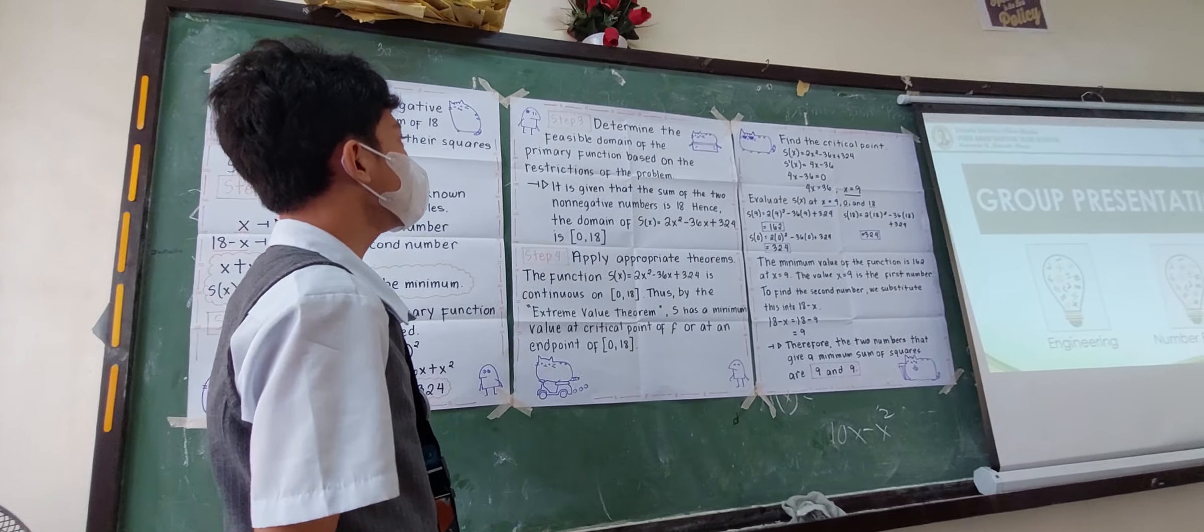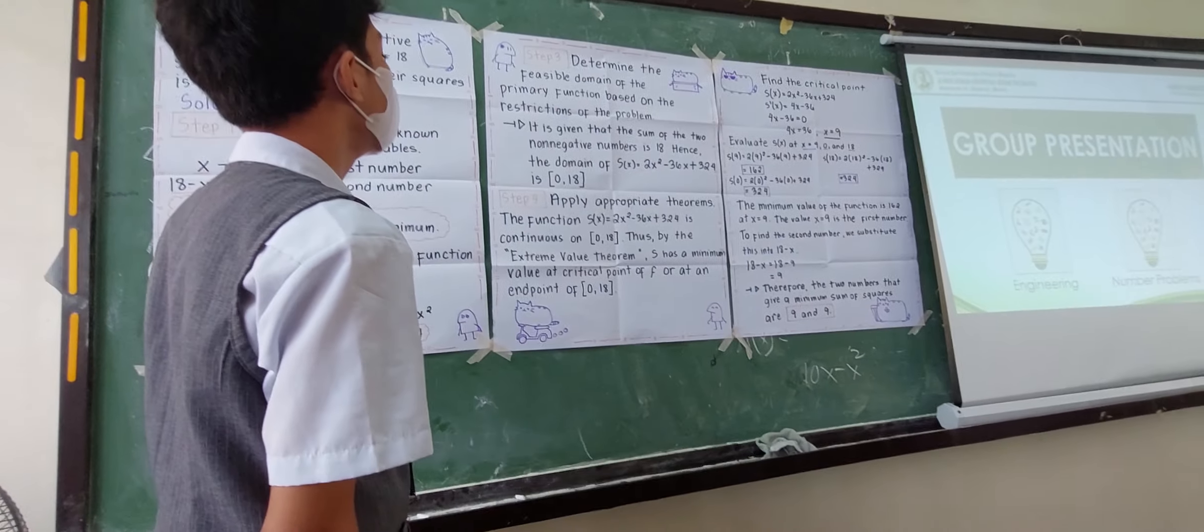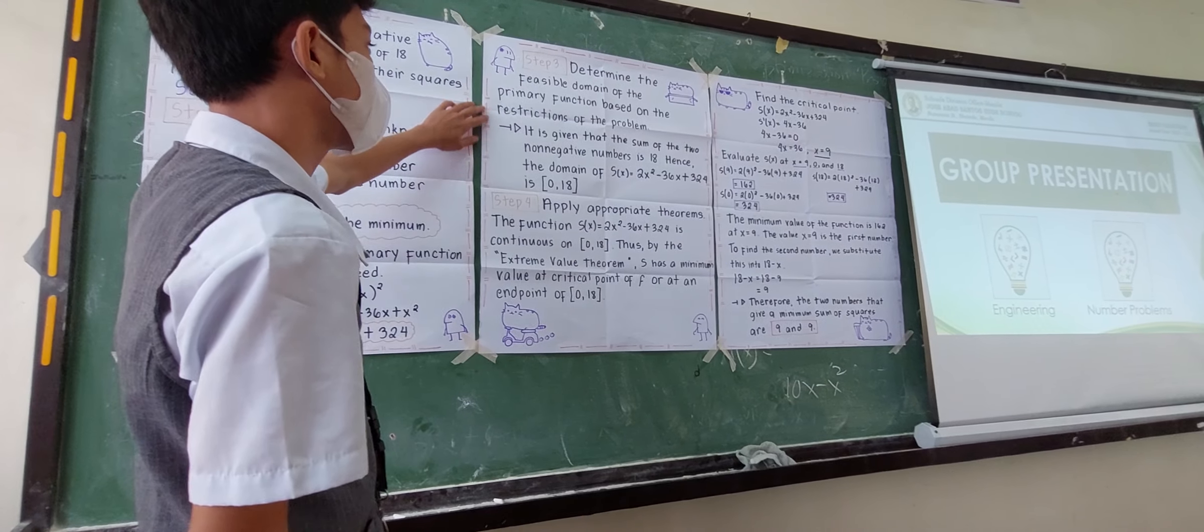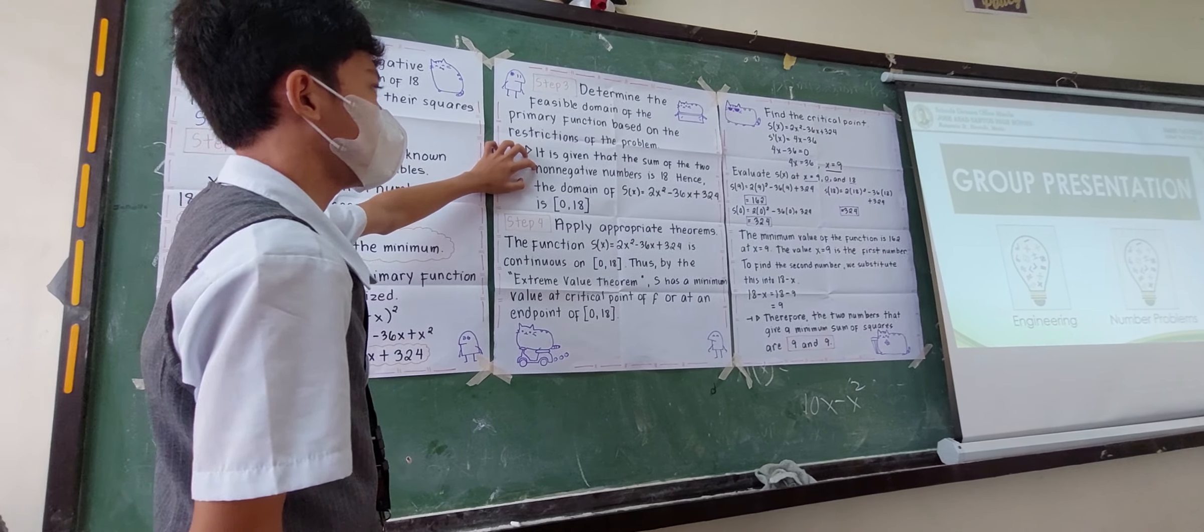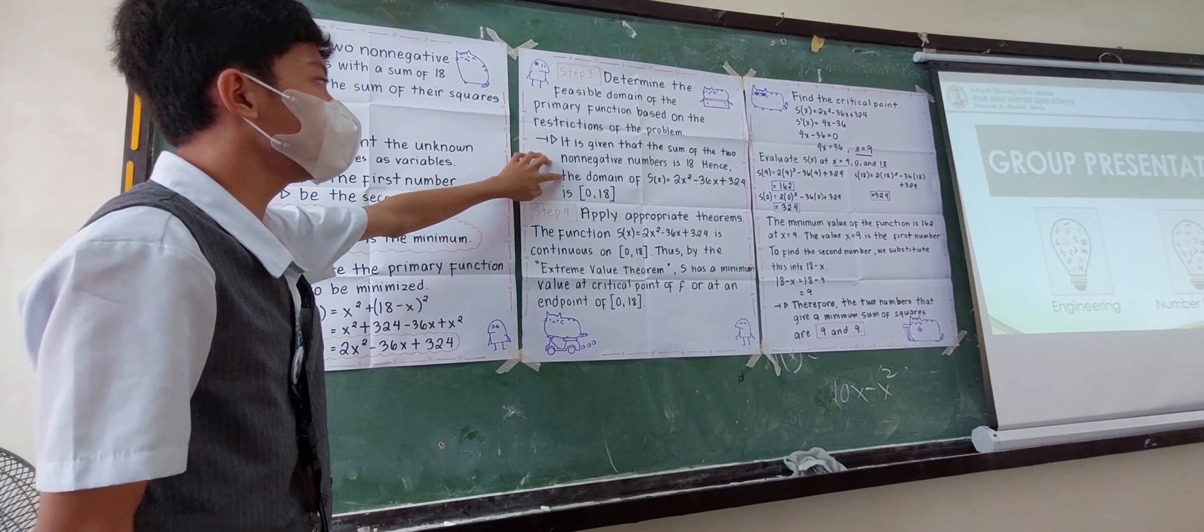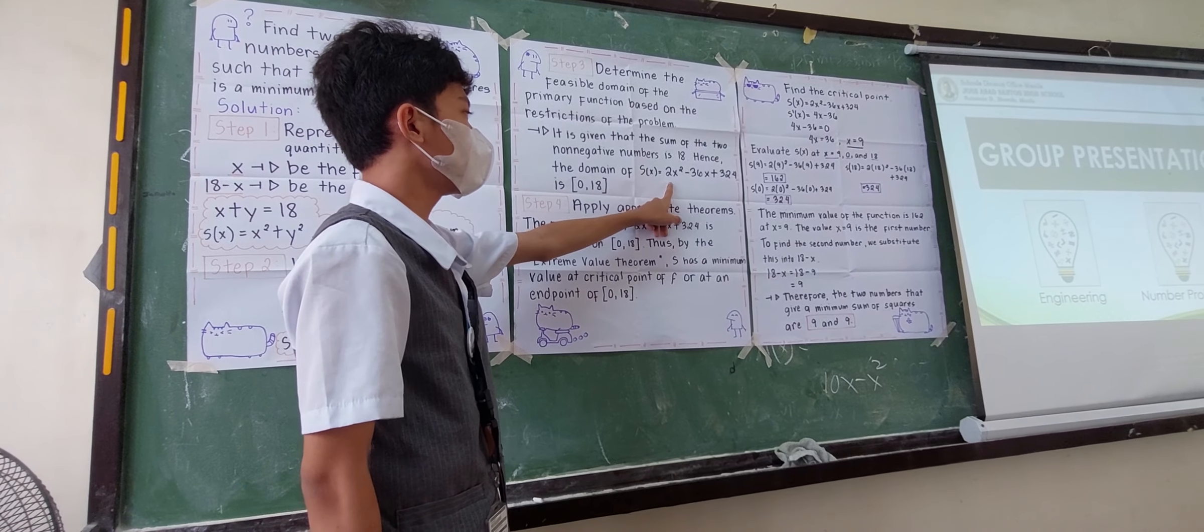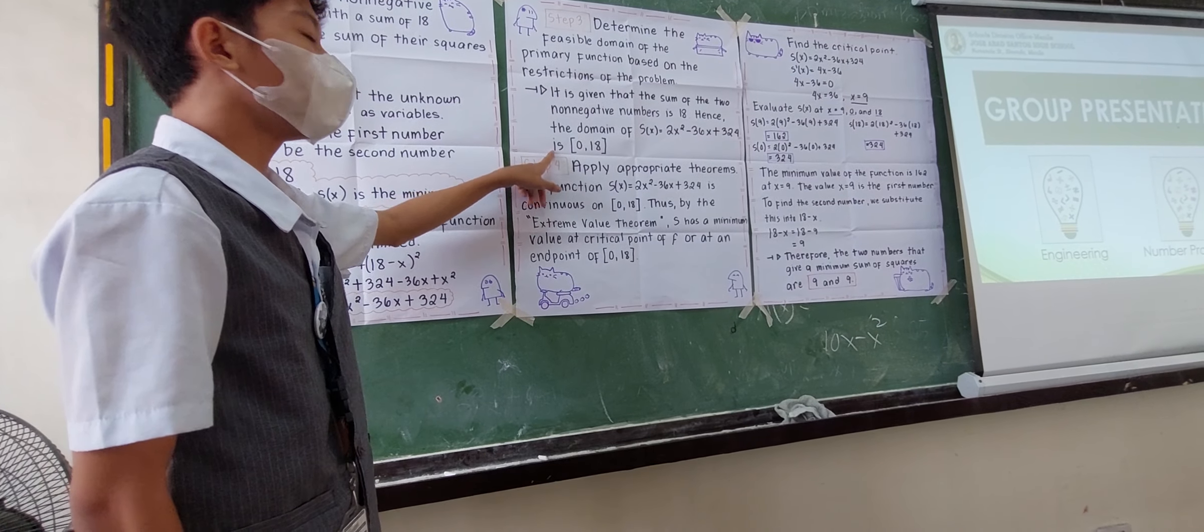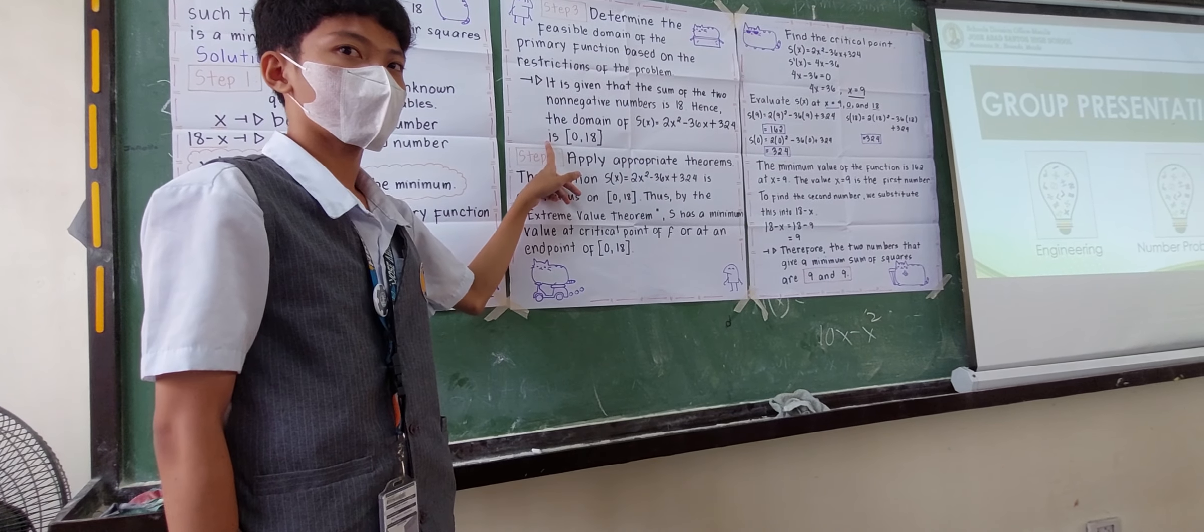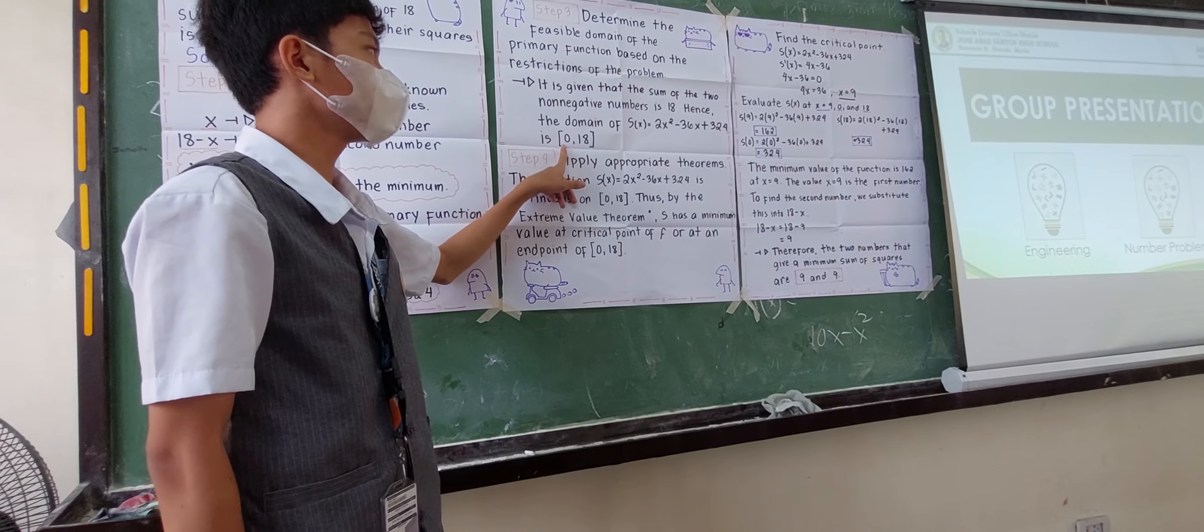For step 3, determine the physical domain of the primary function based on the restrictions of the problem. It is given that the sum of the two numbers is 18. Hence, the domain of S of X equals 2X squared minus 36X plus 324 is on the interval from 0 to 18.